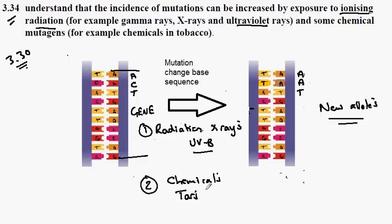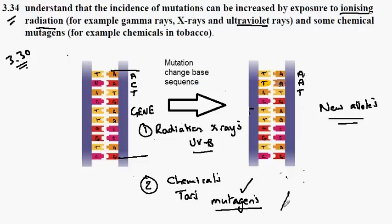Chemicals which cause mutation are called mutagens. Chemicals which cause mutation, known as mutagens, which also cause cancer are called carcinogens.